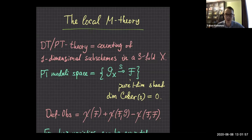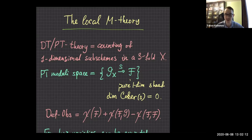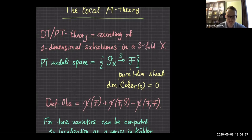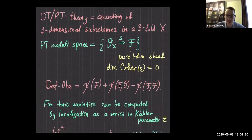The Pandripanda-Thomas moduli space is the space of pairs of a sheaf F and a section S, so that F is a pure one-dimensional sheaf and S is a section such that the kernel of it is zero-dimensional. The deformation-obstruction theory gives the tangent space defined by the Euler characteristic of F plus the Euler characteristic from F to O minus the Euler characteristic from F to F, and it doesn't depend on the section.